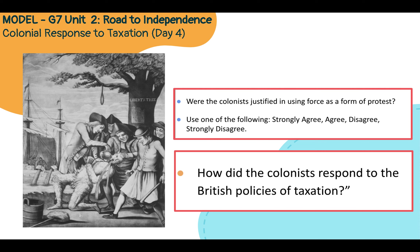In Unit 2 of the Grade 7 curriculum titled Road to Independence, Day 4, there is an image of colonists tarring and feathering a politician or a tax collector. Here, the students are tasked with answering the question: were the colonists justified in using force as a form of protest? They use one of the following — strongly agree, agree, disagree, or strongly disagree. And the culminating question is: how did the colonists respond to the British policies of taxation?